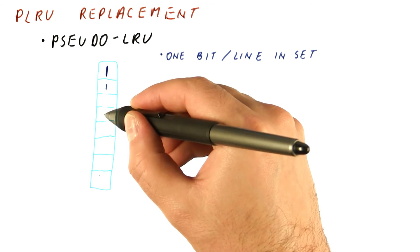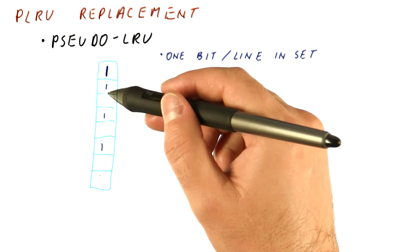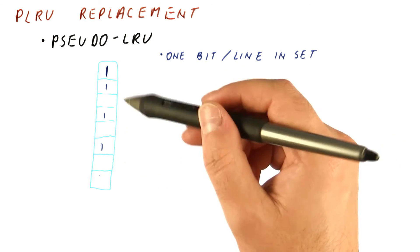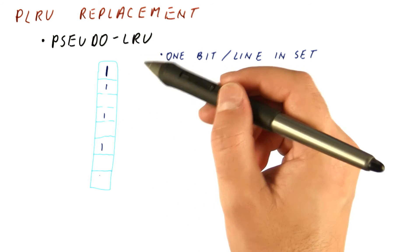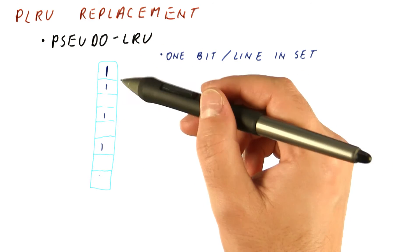But as we start accessing some other blocks, we get a better idea of which ones are more and which ones are less recently used. At any given point in time, this pseudo-LRU policy is somewhere between the NMRU and the LRU policy.